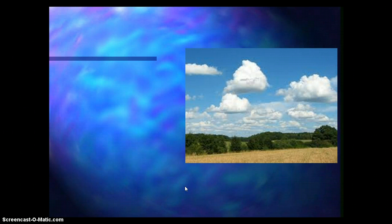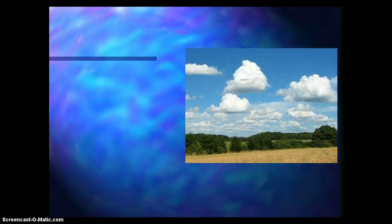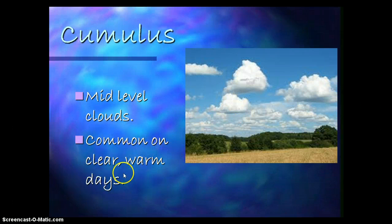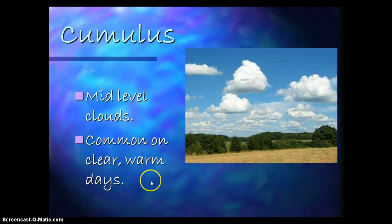And our last one. So we talked about cirrus clouds, we talked about stratus clouds, show and say that last one, those mid-level clouds, ready? Three, two, one. Cumulus! That's right, cumulus clouds. Those are those puffy ones right in the middle. Mid-level clouds that are puffy and they are common on clear, warm days. Now, at the same time, a lot of cumulus clouds could eventually turn into a thunderstorm.